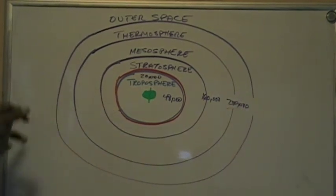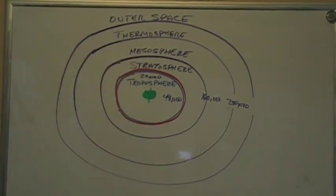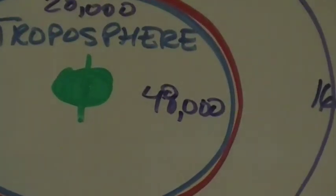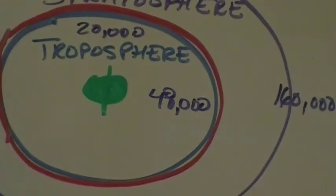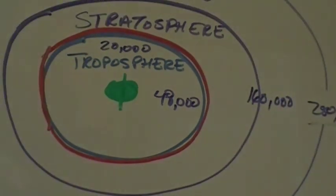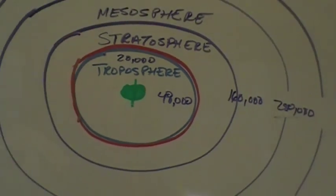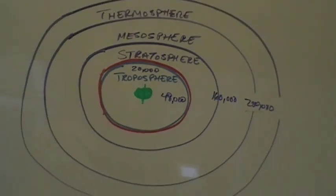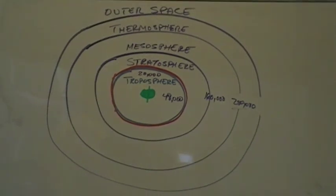The thermosphere eventually fades into outer space. So to recap: the planet, 48,000 feet at the equator and 20,000 feet at the polar regions for the troposphere; the stratosphere out to 160,000 feet; the mesosphere out to 280,000 feet; and the thermosphere extending out until it fades into outer space.